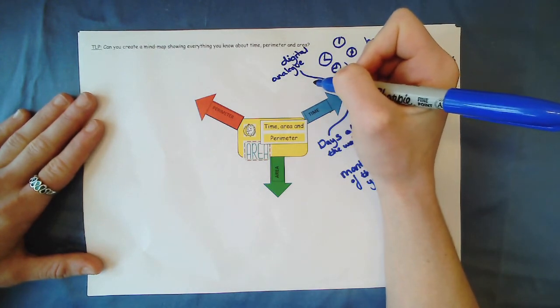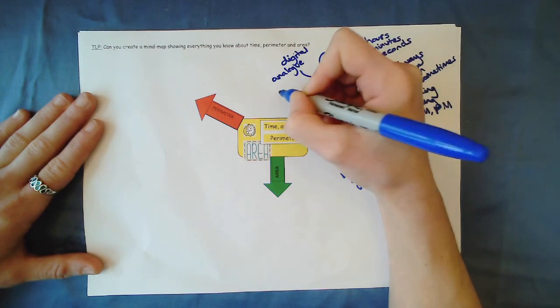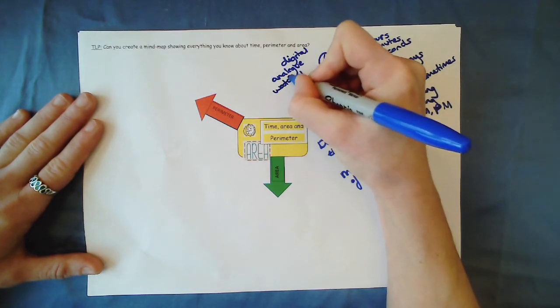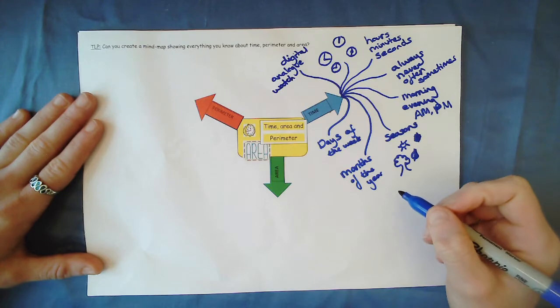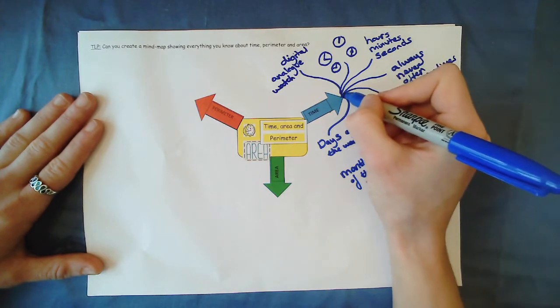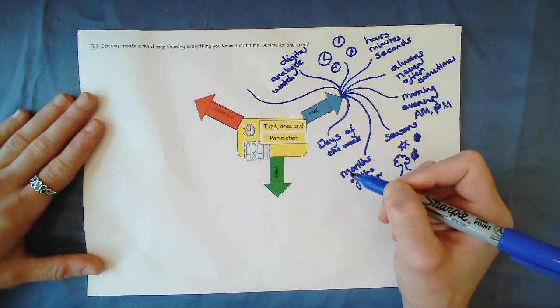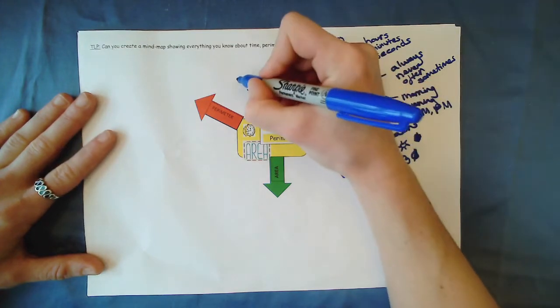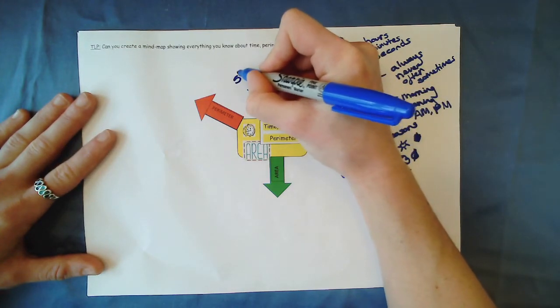What else? How else can you tell the time? You might use a watch. And then if we think about how time moves, we might think it goes fast or slow.